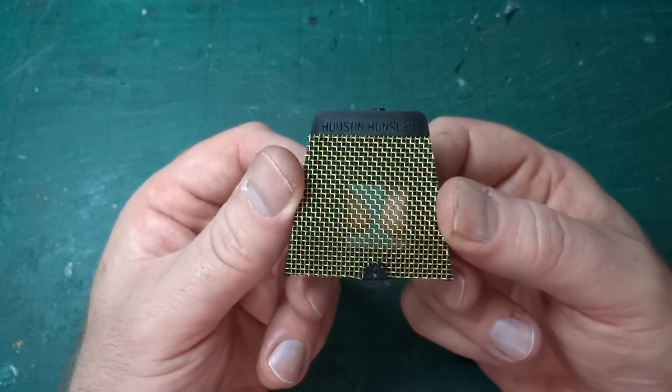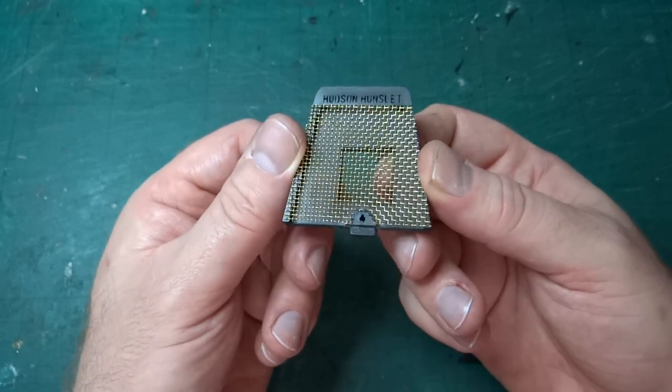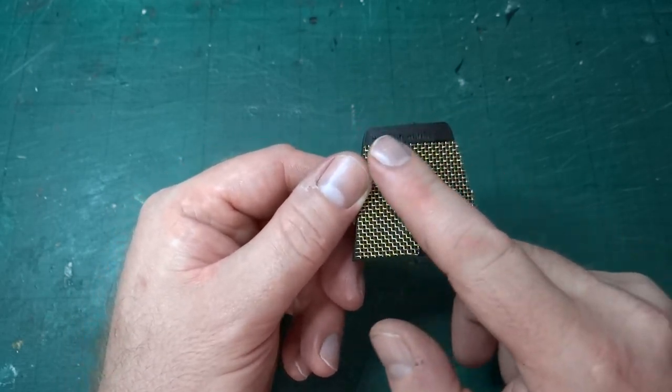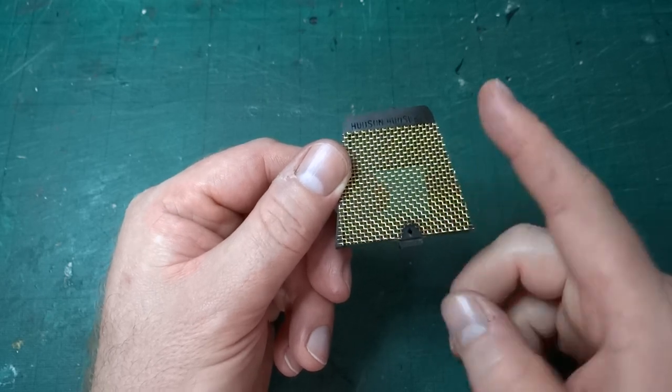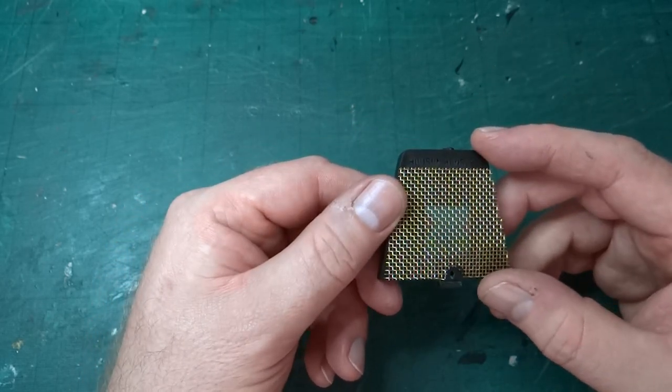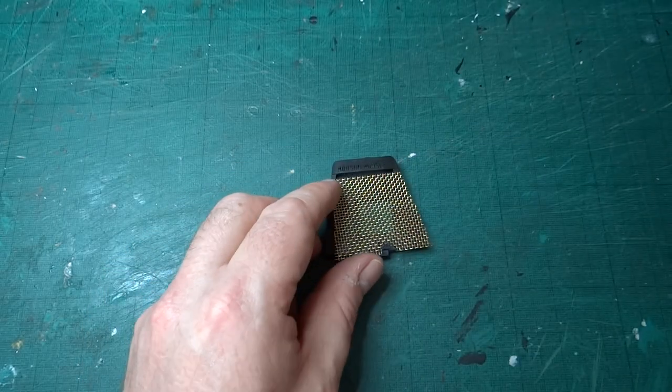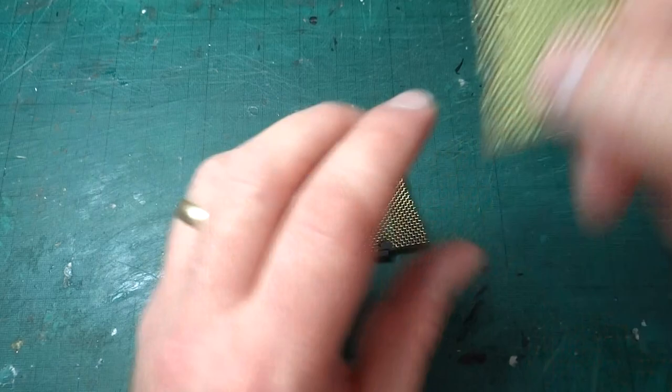So I might need to find some replacement mesh, but at least a quick trial proves that it works and looks reasonable to my eye. On the prototype I think it's actually got a kind of wire surround that the mesh is bent around, but at this scale that's going to be almost impossible to do.